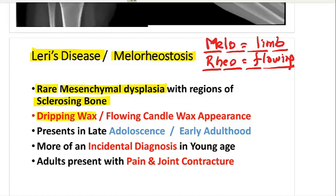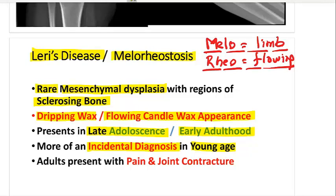I want to remind you that in DISH, elderly males are typically involved, but in melorheostosis, this can happen even in late adolescence as well as early adulthood. In the younger age group, it is more often an incidental diagnosis — people are asymptomatic, and it is discovered when an X-ray is done for another purpose. The clinician then identifies the bone abnormality and concludes it is an incidental finding.